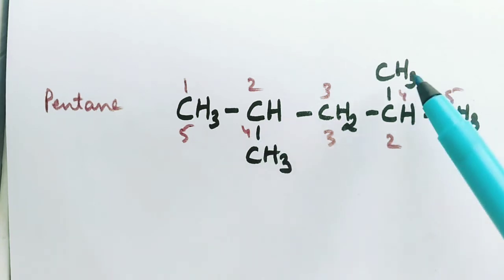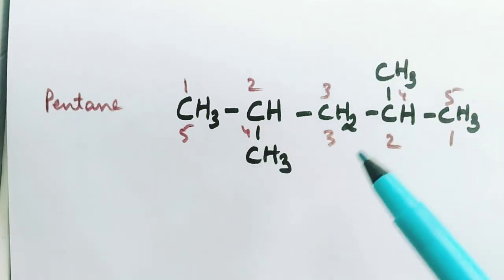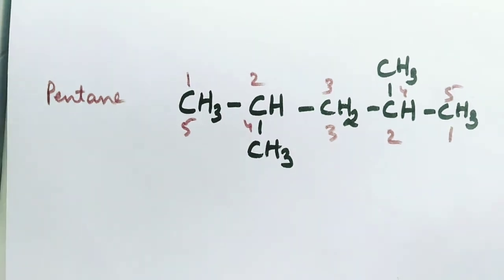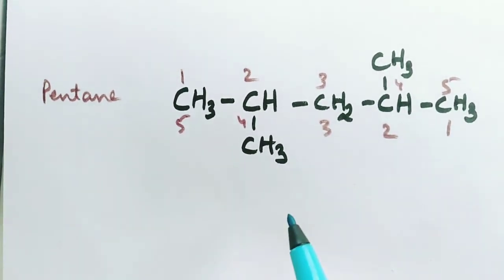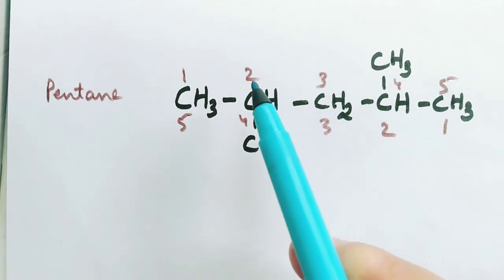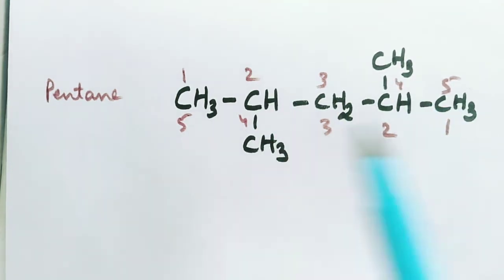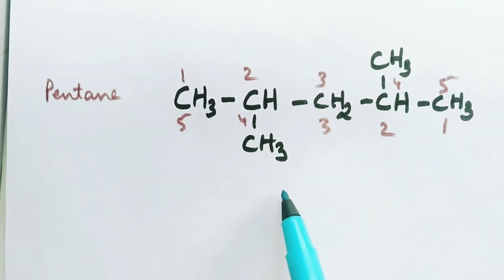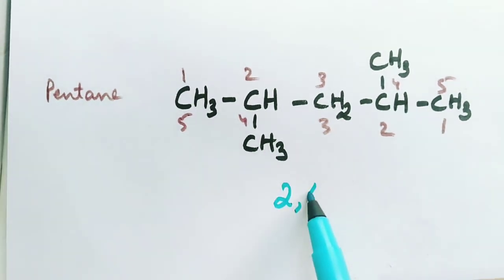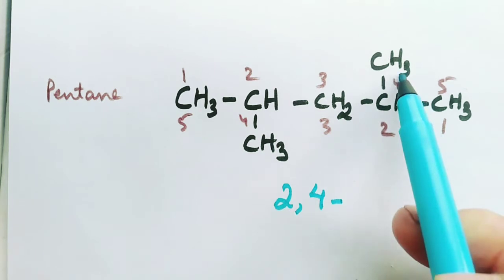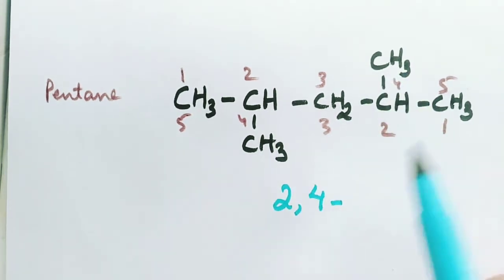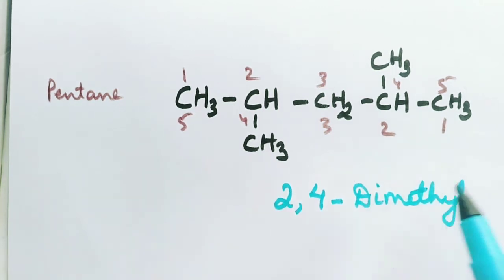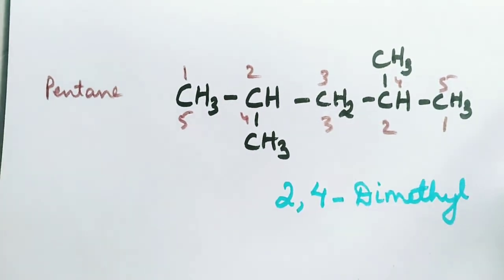At position four, the same thing for this one too. Okay, so there are two methyl groups or substituents. Then how to name this? Two and four. Write first the positions of the two substituents: two, comma, four, hyphen. How many methyl groups are there? Two. So 2,4-dimethylpentane.